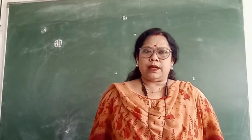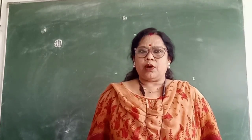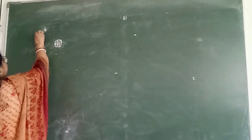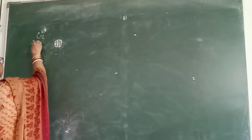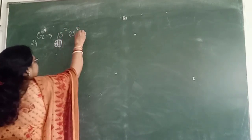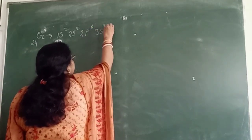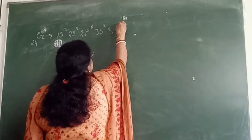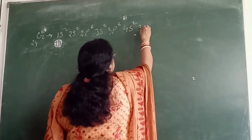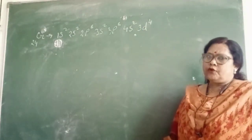Chromium has an atomic number 24. The expected electronic configuration of chromium will be: 1s2, 2s2, 2p6, 3s2, 3p6, 4s2, 3d4. Here the d orbital has 4 electrons.